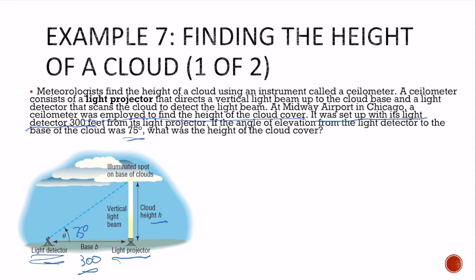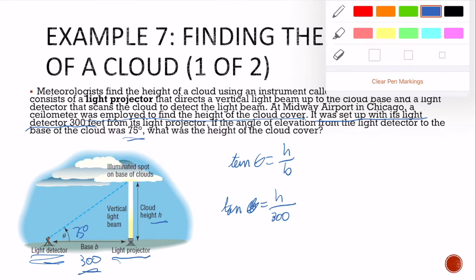Tan of theta is opposite, that's my height, over my base in this case. So tan of theta is h over 300, but I know my theta, my theta is 75 degrees.